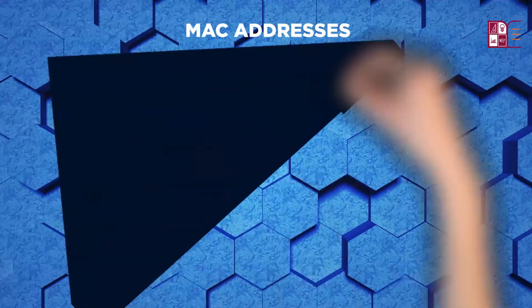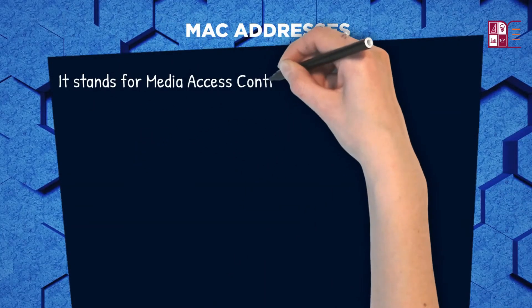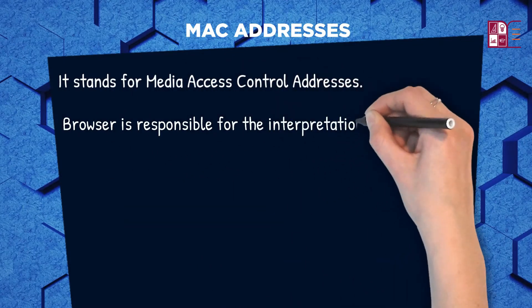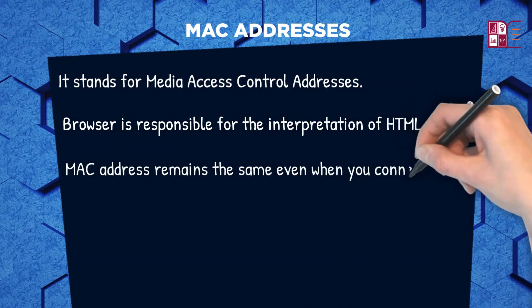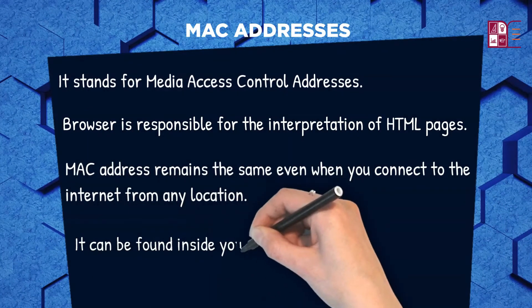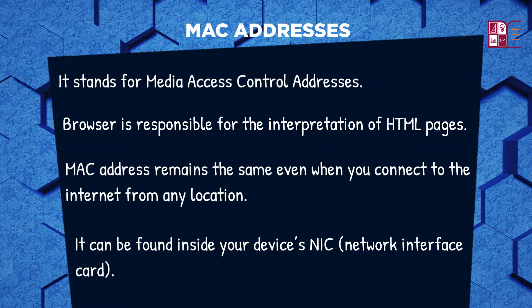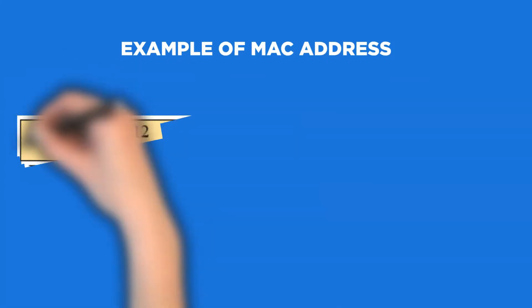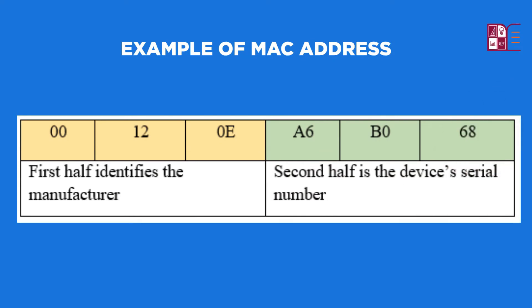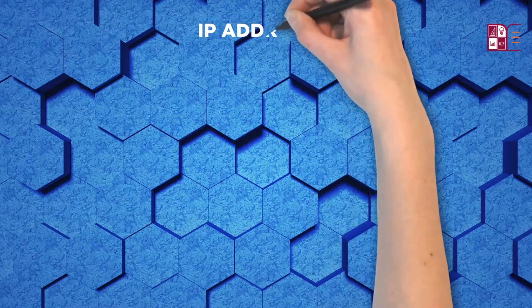MAC address: It stands for Media Access Control address. It is a 48-bit unique value that helps in the identification of the actual device on the internet. The MAC address remains the same even when you connect to the internet from any location. It can be found inside your device's network interface card (NIC). An example of a MAC address is 00:12:0E:A6:B0:68, where the first half identifies the manufacturer and the second half is the device serial number.